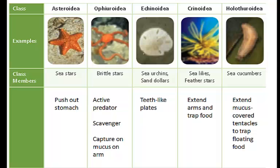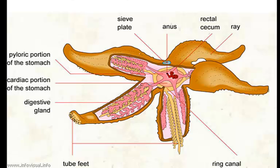Sea stars prey on mollusks, coral, and other invertebrates. Many can push their stomachs out of their mouths and onto their prey, secreting digestive enzymes over the food and bringing the digested material into the mouth — so digestion actually begins outside the body. Brittle stars are active predators that can also be scavengers, using mucus on their arms to capture prey. Sea urchins use tooth-like plates to scrape algae off surfaces or feed on other animals. Sea lilies and feather stars extend their arms to trap food, and sea cucumbers extend mucous-covered tentacles to trap floating food.